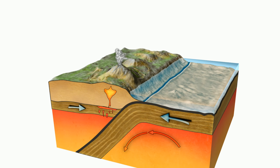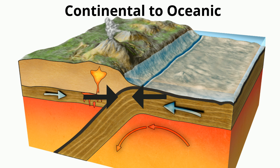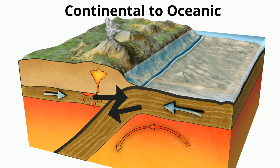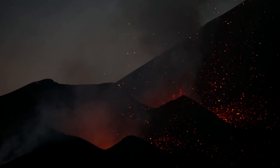Next you have continental to ocean collisions. When a plate of ocean crust collides with a plate of continental crust, the ocean crust is more dense and subducts, or goes underneath, the continental crust. The magma from the melted oceanic crust rises to the surface, and this results in volcanoes along the boundary.